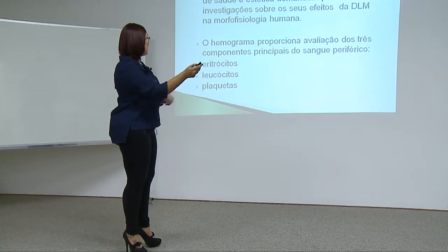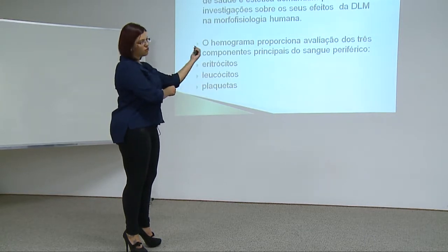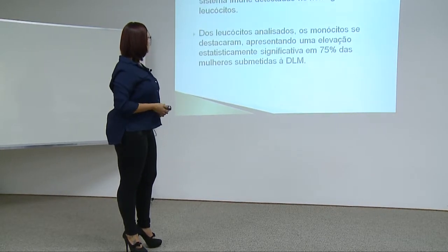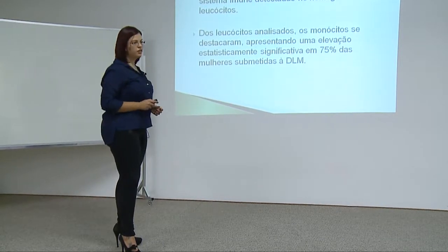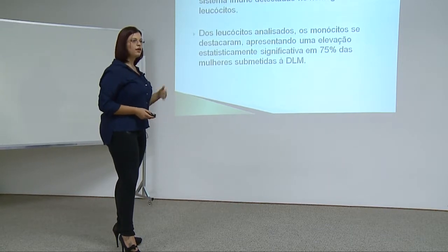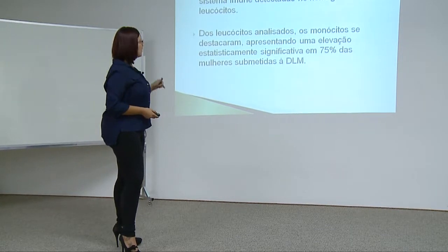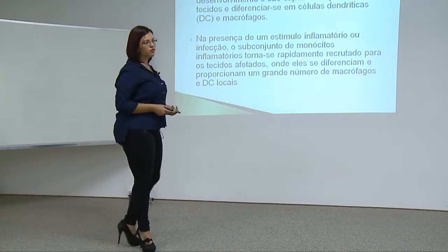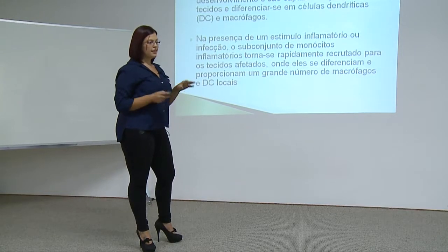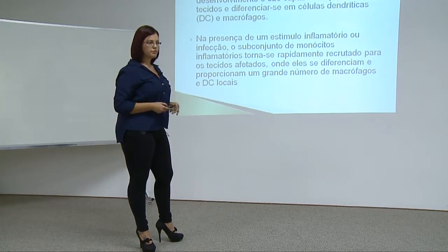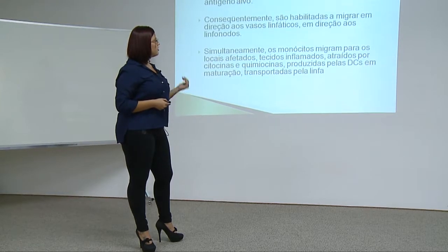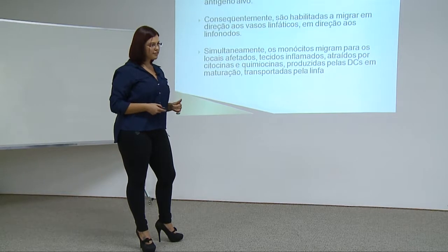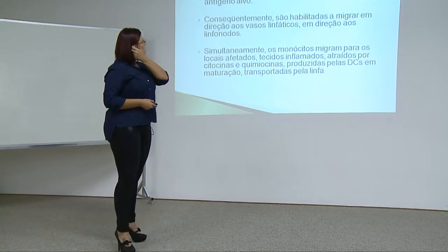Do hemograma, consegue-se avaliar basicamente os eritrócitos ou células vermelhas, as células brancas que são os leucócitos, e as plaquetas. O alvo inicial do trabalho era avaliar os leucócitos quanto ao mecanismo de defesa. Dos leucócitos, os que se destacaram foram os monócitos. Os monócitos fagocitam as células e circulam na circulação sanguínea. Graças ao sistema linfático, eles penetram nos tecidos e se diferenciam em células dendríticas (DCs) e em macrófagos.